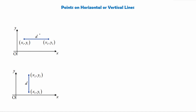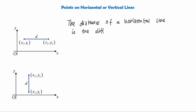So because the y-coordinate is the same, how can we work out the distance? Well, for a horizontal line — which is parallel to the x-axis — the distance is the difference in x-coordinates. This is because the distance is simply going to be the value from one point to the other. So the distance is x2 subtract x1.